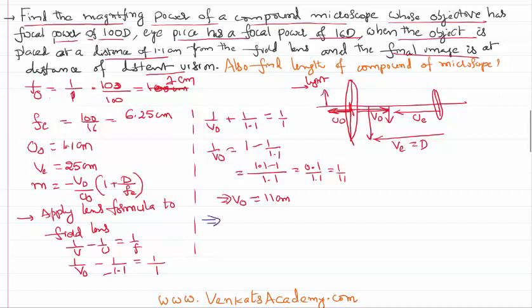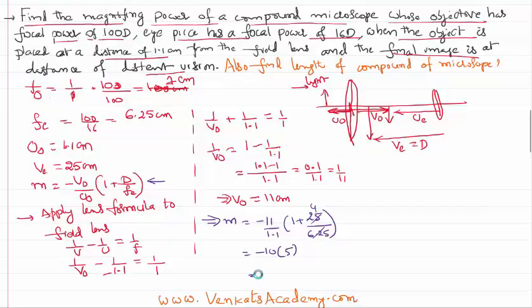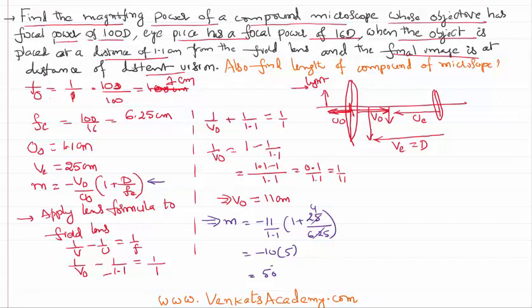You got the value of v_o. I can now substitute in the formula. That implies, in this formula, magnification is minus v_o. Minus is anyway, as I told you, symbolic. v_o value we have got as 11 by u_o 1.1, d is 25, f_e is 6.25, so minus 10 to minus 50. That minus is a symbolic way of saying that your final image is an inverted image. That's one part of the problem. There is another part of the problem.